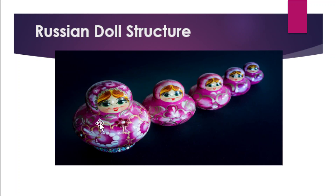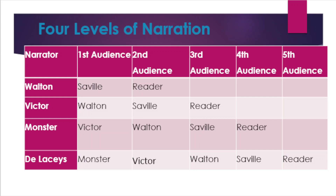The largest doll of the narrative is Robert Walton. Inside it rests the narrative of Victor Frankenstein. Inside Victor's doll rests the smaller doll — the narrative of Victor's creature. The creature's tragic tale contains the smallest doll in the set: the story of the De Lacey family. In this chart you can see clearly there are at least five audiences with four levels of narration in the structure.